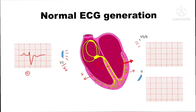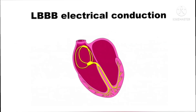On the left-sided leads, just the opposite happens. We see the first negative deflection away from the lead, then a significant positive deflection because the net direction of the current is towards the lead, followed by repolarization. After understanding this, we need to understand the LBBB conduction abnormality.